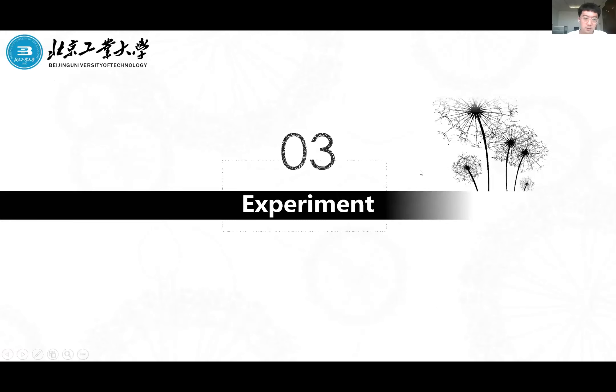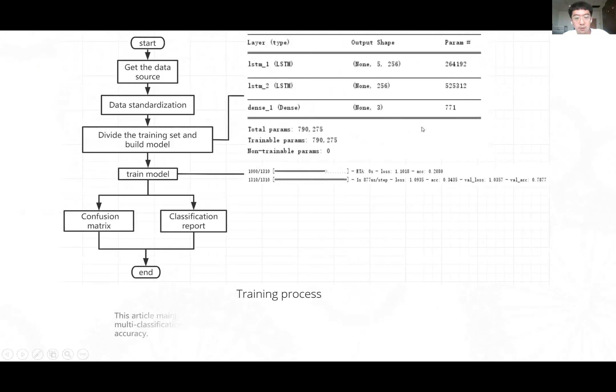Part three, experiment. This is our training process. First, we get the data source, and then standardize the data, divide the training sets and build the model. This is our design of the model. And then I will always train the model. This picture shows the first epoch value. Through the training model, we can get confusion matrix and classification reports.